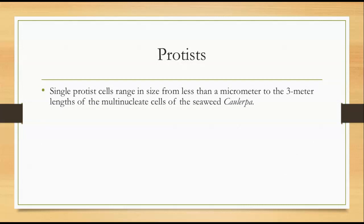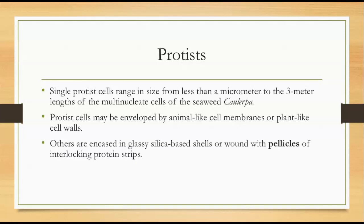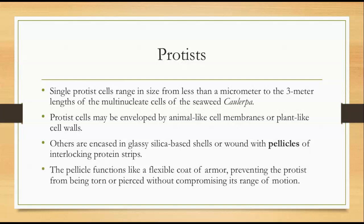Single protist cells range in size from less than a micrometer to the three-meter lengths of the multinucleate cells of the seaweed Caulerpa — I'll show you a picture of that on the next slide. Protist cells might be enveloped by animal-like cell membranes or they could have plant-like cell walls. Others could be encased in a glassy, silica-based shell, or wound with pellicles of interlocking protein strips. The pellicle functions like a flexible coat of armor — it prevents the protist from being torn or pierced while allowing it to maintain its range of motion.